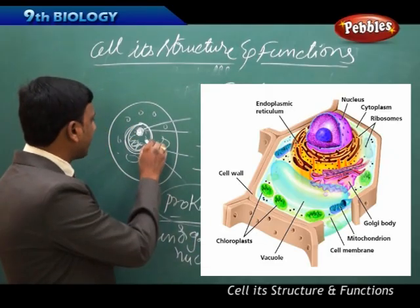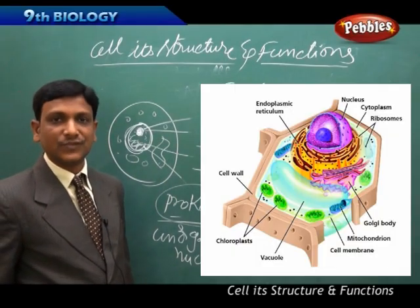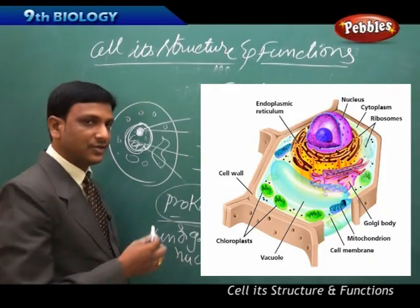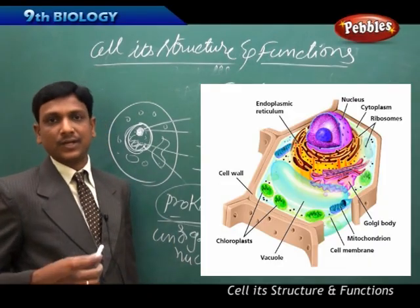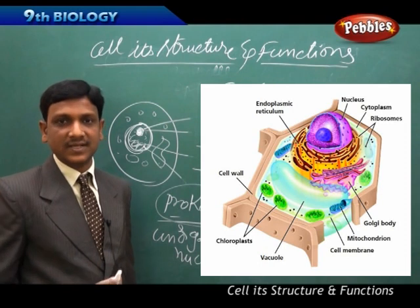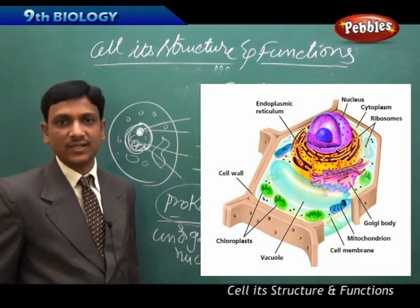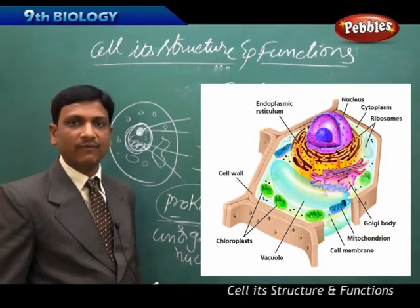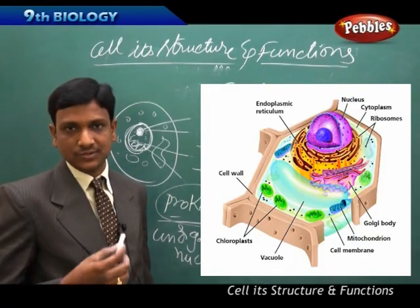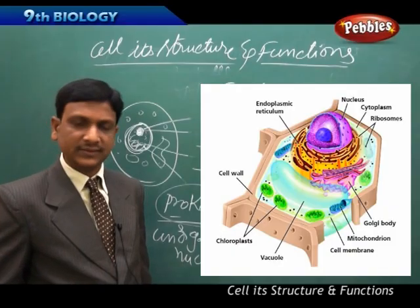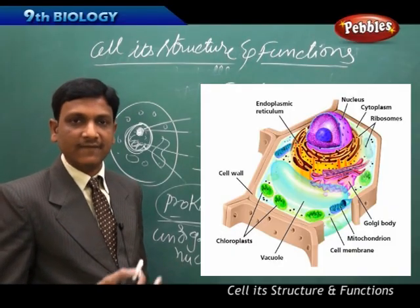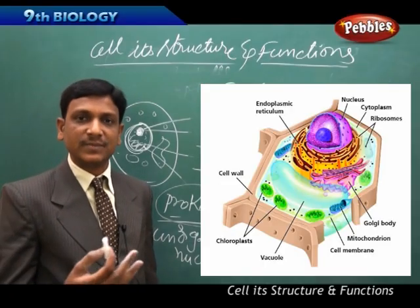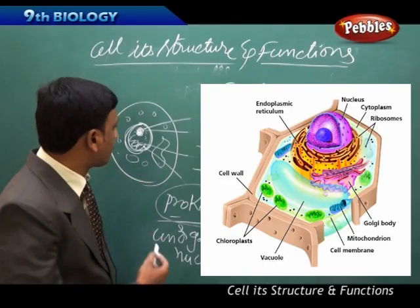Do all cells have a nucleus? No — there are certain exceptions. Most cells have a nucleus, but human red blood cells do not have a nucleus. Similarly, in plant cells, phloem sieve tubes also do not have a nucleus. There are other examples of cells that do not possess a nucleus, for specific purposes.